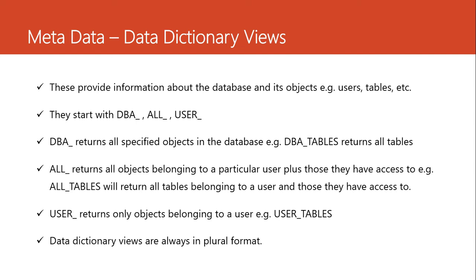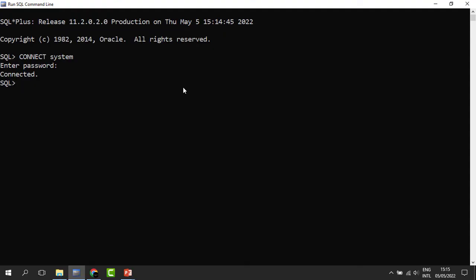When we say ALL_TABLES we mean return all the tables belonging to Brian plus those tables he has been given access to — in this case Aisha's tables. But when we say USER_ we mean return the specified object belonging to only a particular user. For example, USER_TABLES means return only the tables belonging to Brian. With USER_TABLES, Aisha's tables will not be returned.